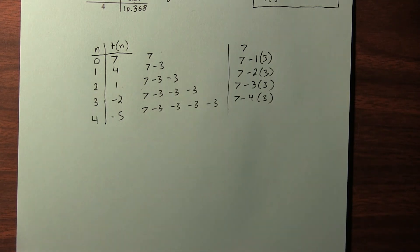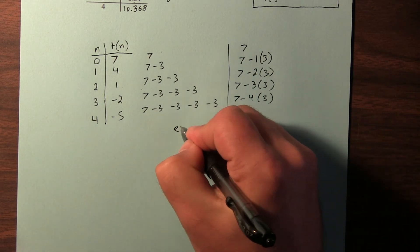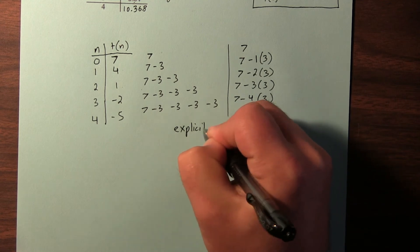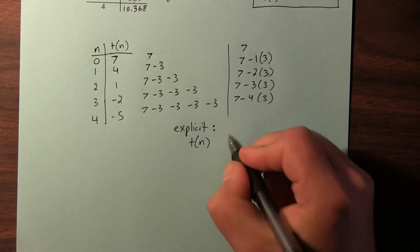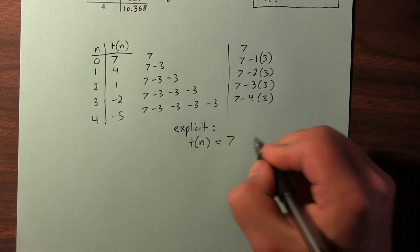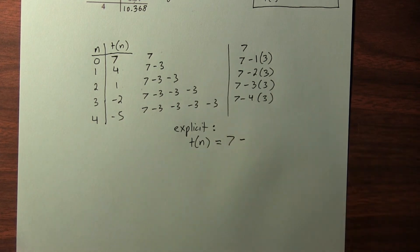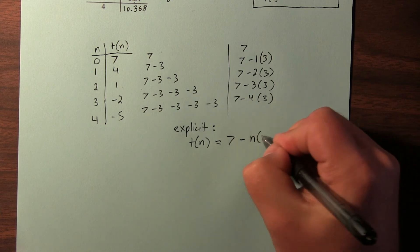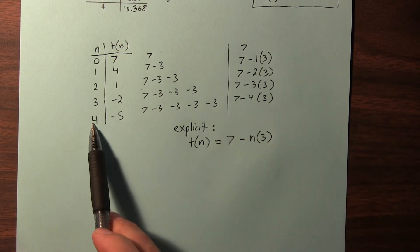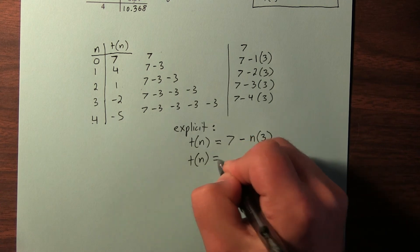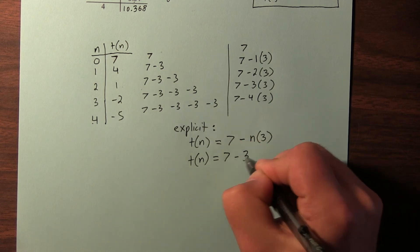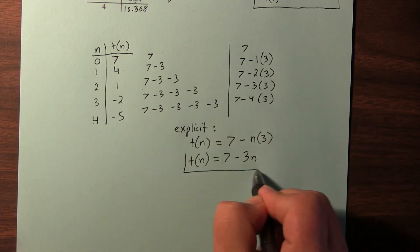That gives us some insight on the explicit equation. So the explicit equation actually is to find a term, you take 7, and you subtract n times 3 from it. See, when n is 4, we need to subtract 4 times 3. But we need to rewrite this with better mathematical notation, so we'll just write it like this: f(n) = 7 - 3n. That's the explicit equation right there.